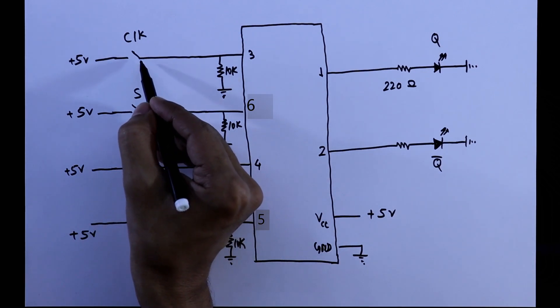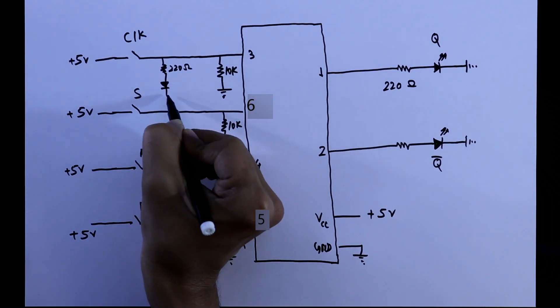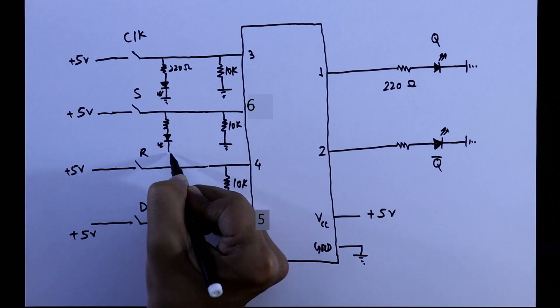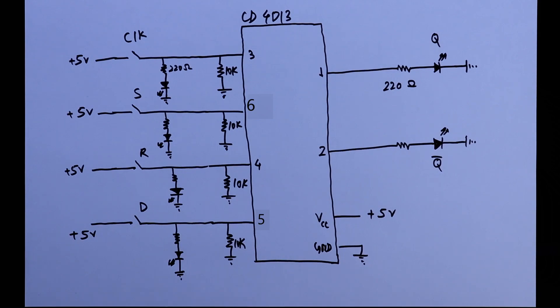And after the switch, I will also connect an LED, so that whenever the switch is turned on, this LED will glow up, with a series resistor of 220 ohms. So this is it, now we will see this in practical.